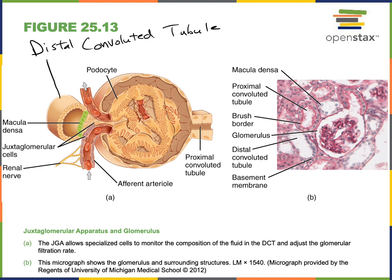The macula densa is a region of the distal convoluted tubule that contains sensory receptors monitoring the sodium concentration and flow rate of the filtrate. The macula densa secretes paracrine signals to regulate the afferent arteriole. The mechanism of tubuloglomerular feedback involves the paracrine signal adenosine being released by the macula densa to stimulate constriction of the smooth muscle surrounding the afferent arteriole, as a mechanism to decrease glomerular filtration rate.